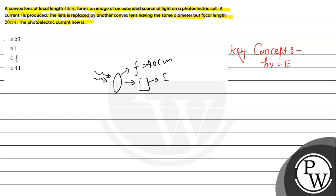If we use a convex lens, the current amount is given equal to I. The question is, if we use the same convex lens but the focal length is 20 cm.